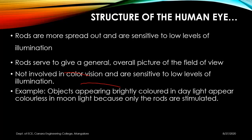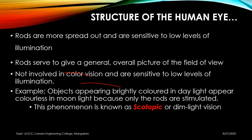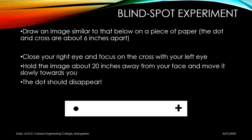You can verify the blind spot in the human eye with a simple experiment. Draw a dot and a cross six inches apart on white paper, making them thick and dark. Close your right eye and focus on the cross with your left eye. Hold the image about 20 inches away from your face and move it slowly toward you — the dot should disappear. You can pause the video, do the experiment, and then continue.